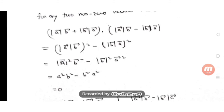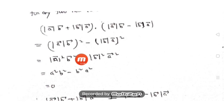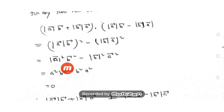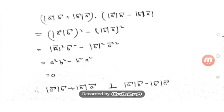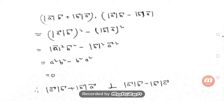Expanding: |a|²|b|² - |b|²|a|² = 0. Since both terms are equal, the dot product is zero, confirming the two vectors are perpendicular. So (|a|b + |b|a) ⊥ (|a|b - |b|a) for any non-zero vectors a and b. That concludes today's session; remaining questions will be covered in the next class.